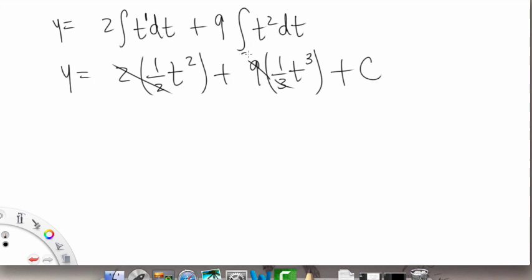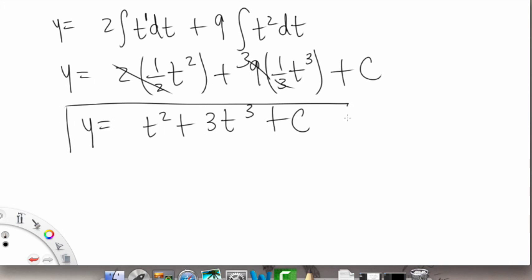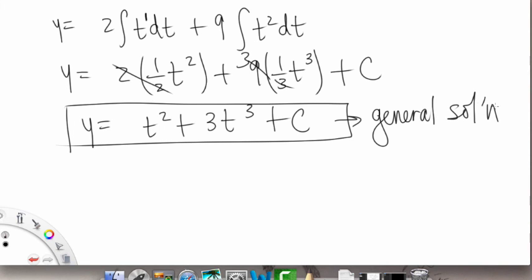When we simplify here we're going to get y equals t² plus 3t³ plus C. So this here what we found is our general solution. General solution meaning we have that C and we don't know what it is because we don't know any other information.